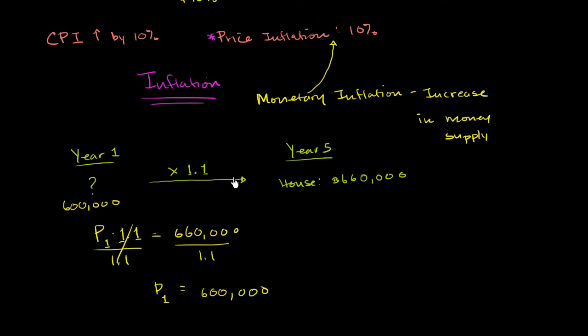But the general idea is a house in year one that is $600,000, if you factor in the devaluing of the currency, or how much more expensive everything got in year five would cost $660,000. So you might hear someone say, when they're talking about inflation or they're talking about price increases, this house in year five is $660,000, which is equal to $600,000 in year one money.